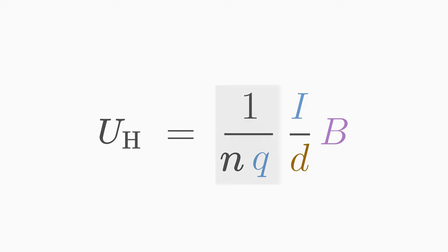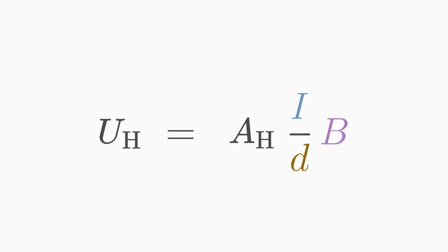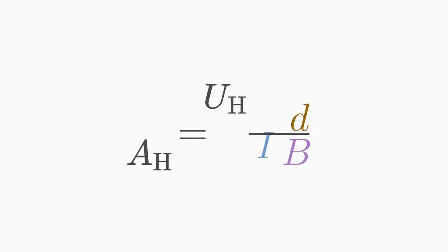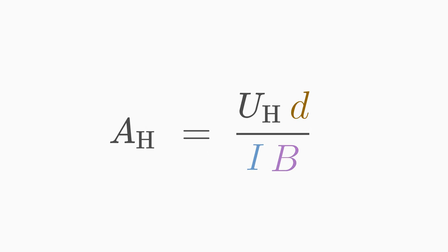The factor 1 divided by n times q is called the Hall constant and is abbreviated as Ah. The Hall constant depends on the used metal and can be determined in an experiment because you can easily measure the current i, thickness d and magnetic field b.